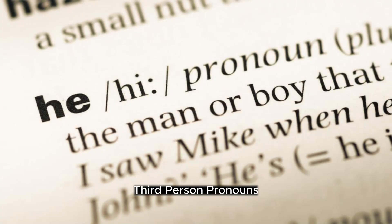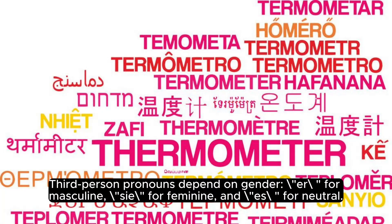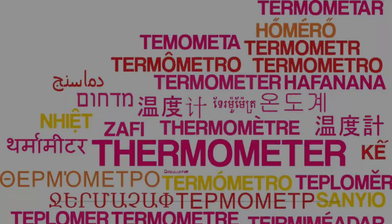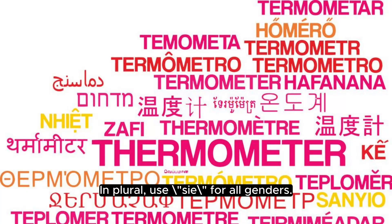Third-person pronouns: use 'er' for masculine, 'sie' for feminine, and 'es' for neutral. In the plural, use 'sie' for all genders.